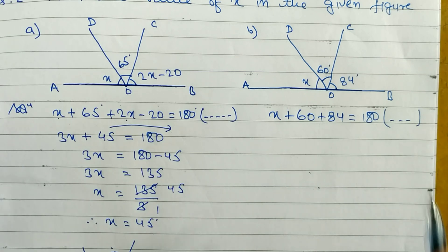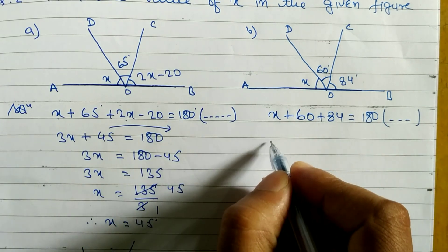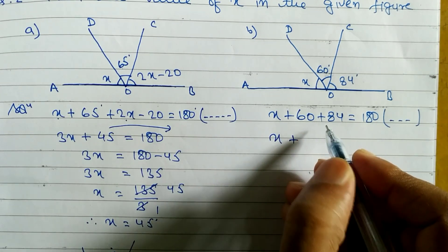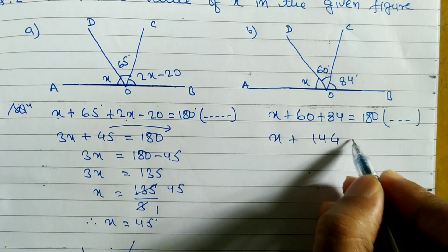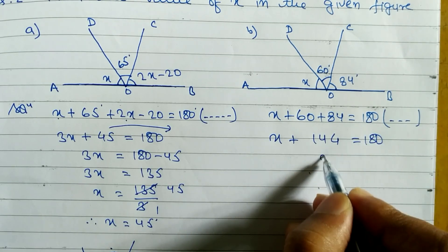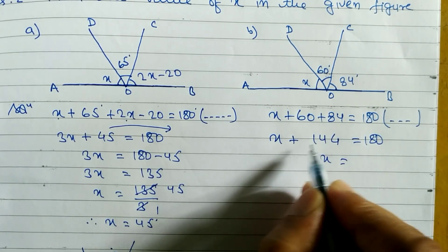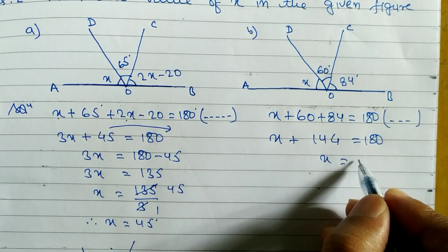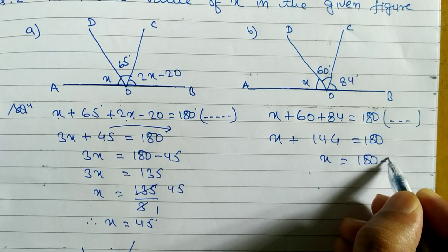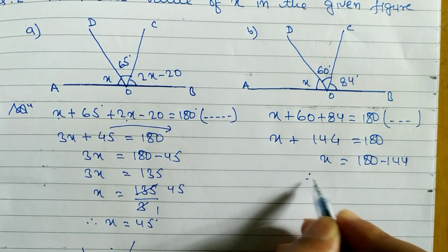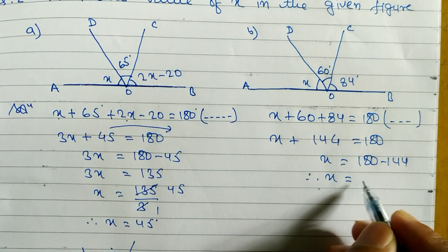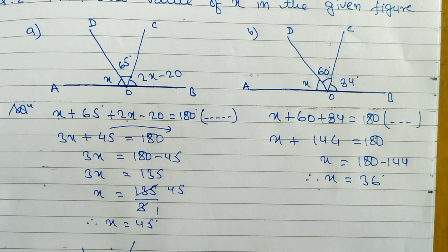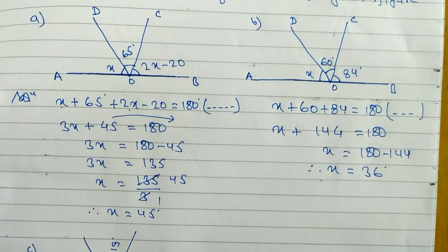Now when you add 60 plus 84 you get 144, so x plus 144 is equal to 180. These two are unlike terms so we subtract: x is equal to 180 minus 144. Therefore x is equal to 36 degrees. So the value of x is equal to 36 degrees.